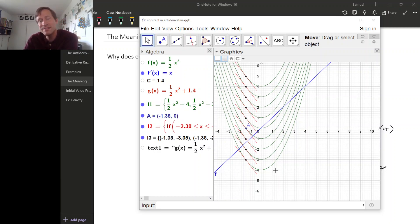So what this is telling us is that this plus C that shows up is showing up because shifting a graph vertically does not change the slope of the tangent line to a graph, and so it won't change the derivative either. So that's what the plus C is in all of our antiderivatives. It's just a vertical shift.